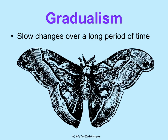Gradualism is simply slow changes over a long period of time, usually caused by slow environmental changes. This picture is of a peppered moth, a common example in evolution. Pre-industrial revolution in Europe, moths always varied in color, but lighter colored moths were favored because trees were lighter colored. Over time, through the industrial revolution and environmental pollution, the trees started to darken. Natural selection then started to favor moths with darker colorations, and gradually the majority of moths evolved to have this darker coloration. That's an example of gradualism.